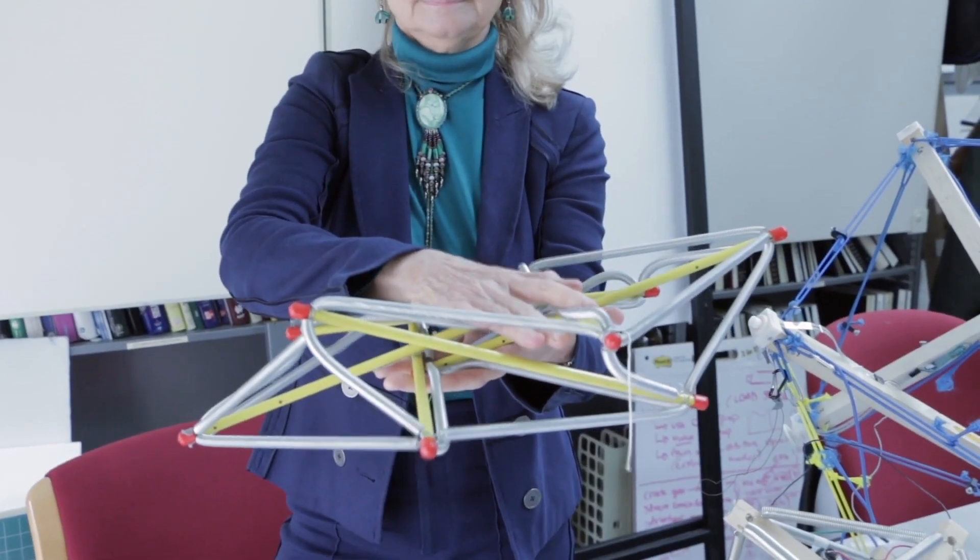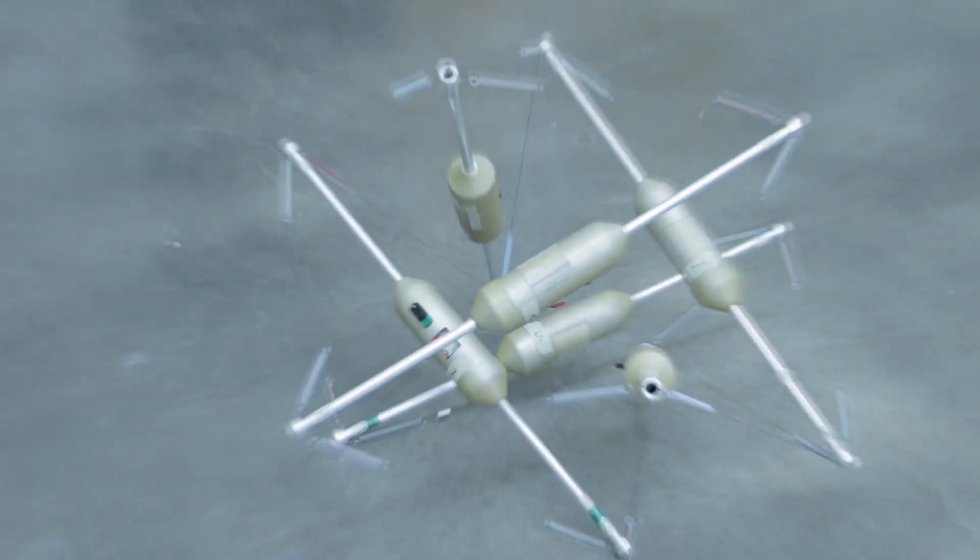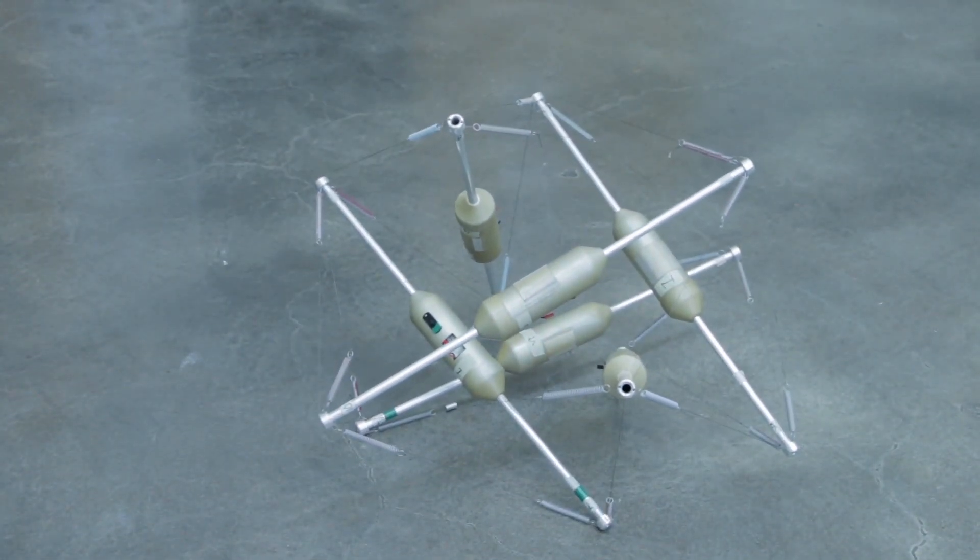Although the first robot prototype was built with Legos, the latest version has been upgraded with aluminum rods and 3D printed parts.